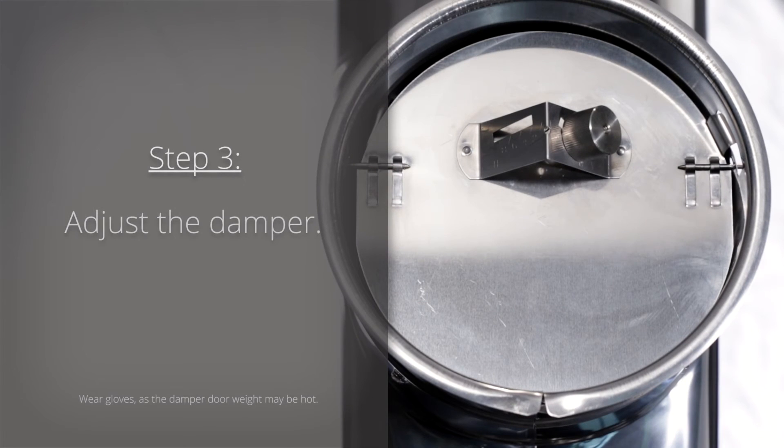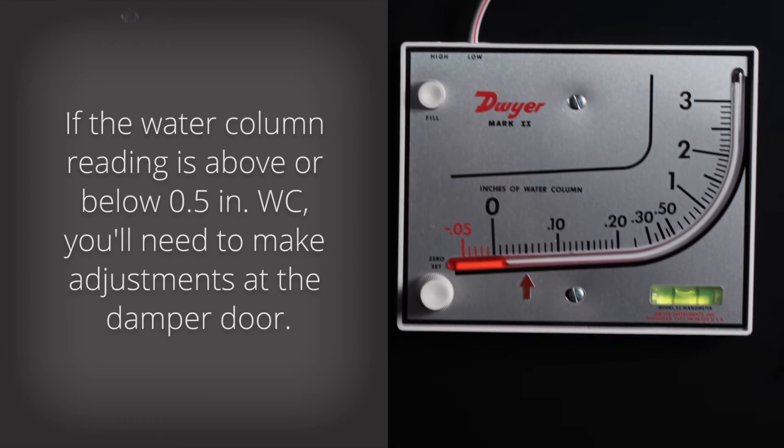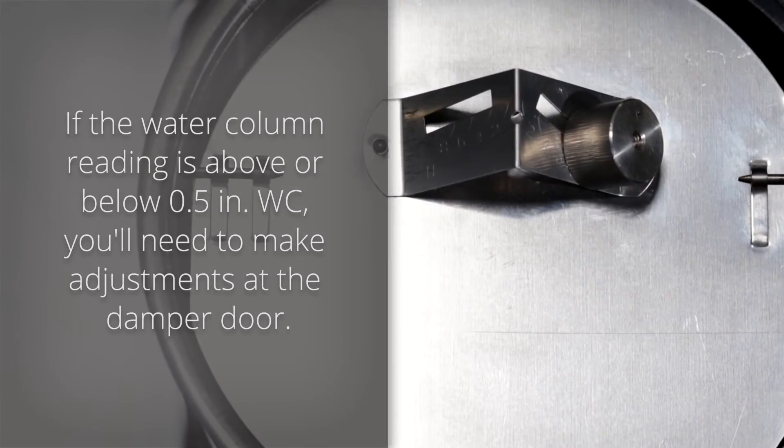Step 3. Adjust the damper. If the water column reading is above or below 0.05 inches of water column, you'll need to make adjustments at the barometric damper door.